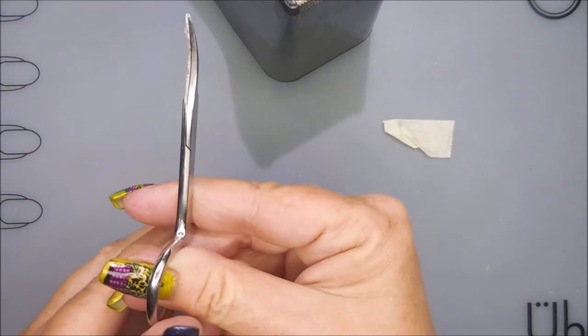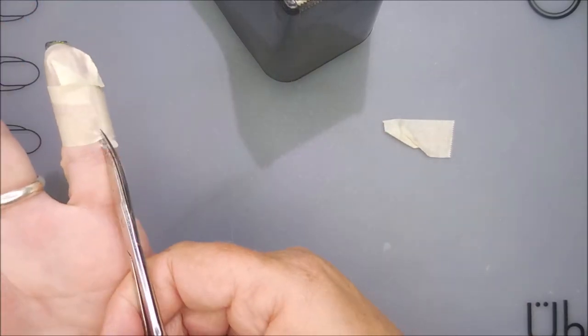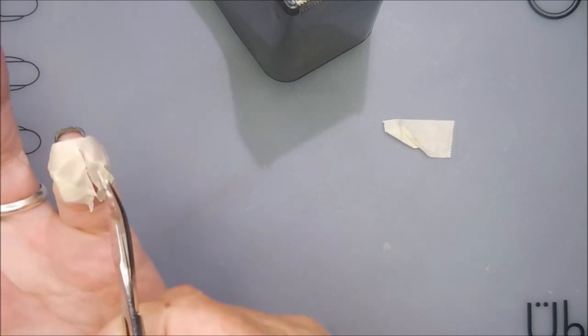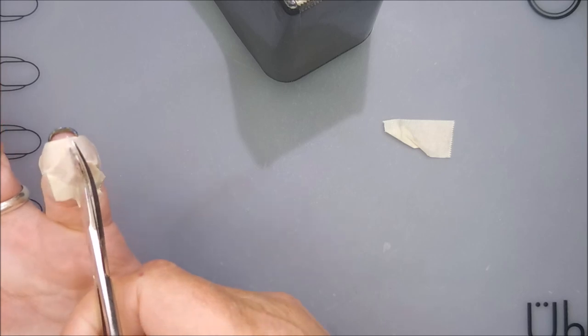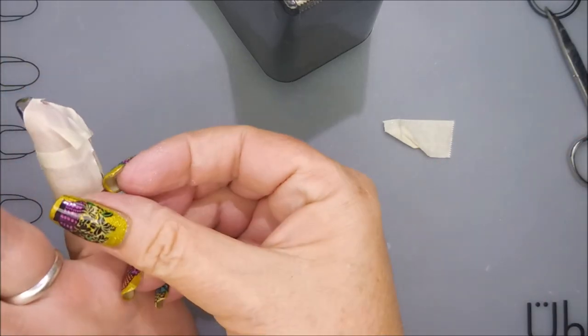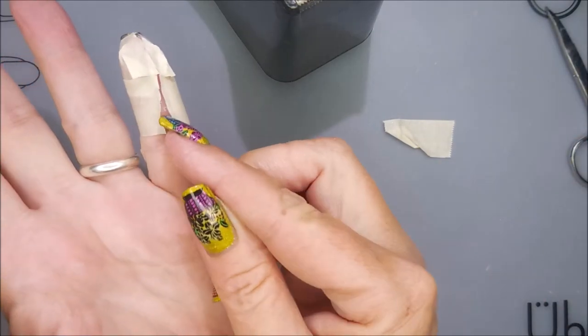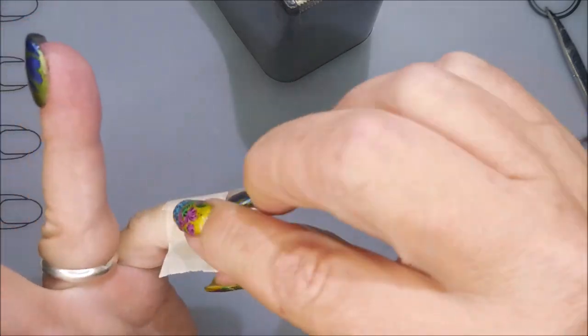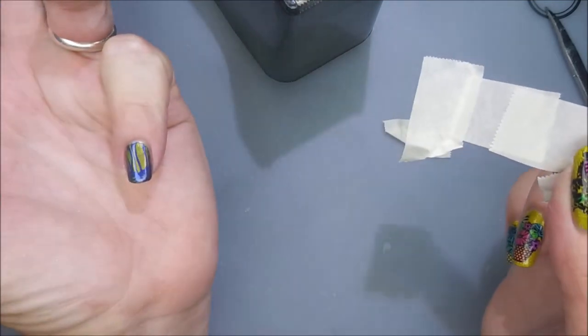So you got some of those little nail scissors and you just trim up underneath it without cutting yourself, of course. And then you can grab it with your tweezers or if you've got a spot that didn't have polish on it underneath, you can just grab it like that and peel everything off.